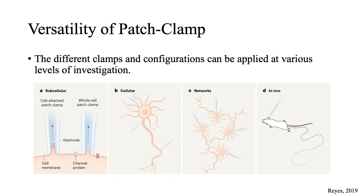The different configurations that we just discussed can be applied at different levels of investigation in combination with pharmacological, optogenetic, or chemogenetic approaches. It is because of this versatility and the nature of the measurement that patch clamp is considered to be the most direct and effective way to study the electrical signals of the brain.